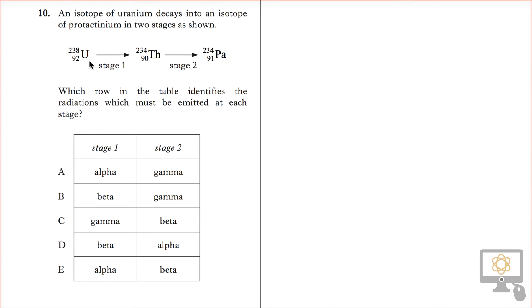So stage one is here: uranium goes to thorium, which goes to protactinium.